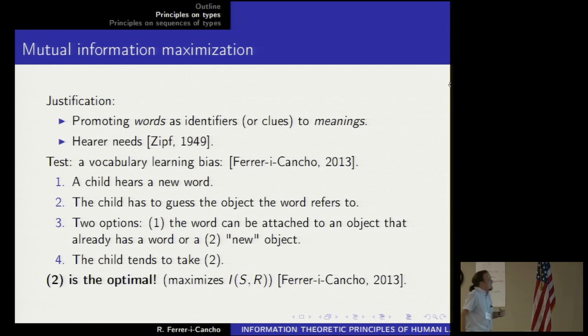The idea behind this mutual information maximization is that when we maximize it, we are promoting words as identifiers or clues to meanings, and this reflects hearer needs. If you're thinking of communication as something involving a speaker and a hearer, the more close you are towards being identifiers, the easier the job for the receiver. We want to see if this works in general, and in particular circumstances, such as the case of learning vocabulary.